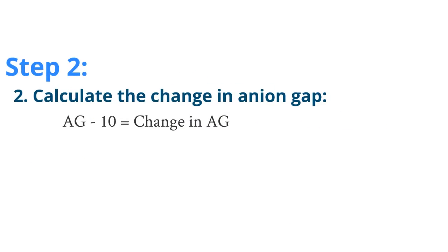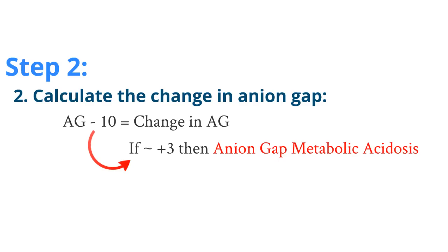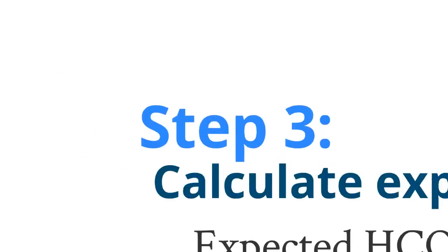Step 2: calculate the change in anion gap. We will assume a normal anion gap is 10. Thus, you take your previously calculated anion gap from step 1 and subtract 10 from that to get your change in anion gap. If this change is around positive 3 or greater, then you have an anion gap metabolic acidosis.